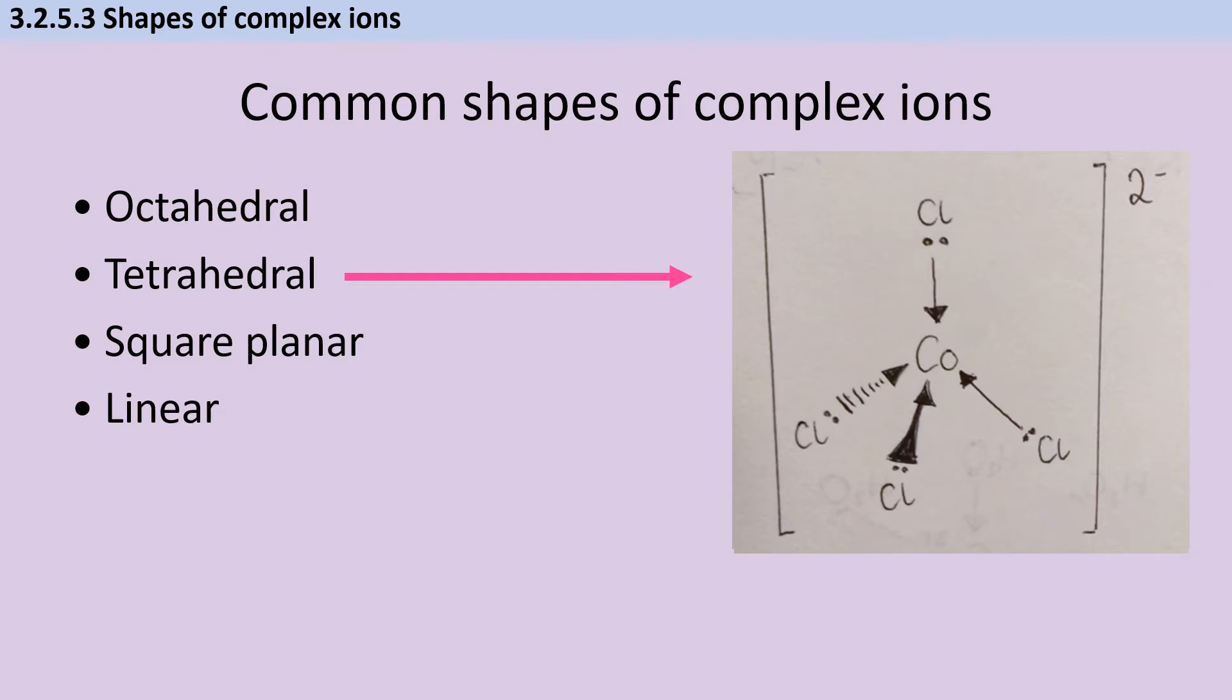When chloride ions replace water molecules in a hexa aqua ion with copper 2+, cobalt 2+, or iron 2+ at the center, or when they replace ammonia molecules or hydroxide ions, their larger size means only four ligands can surround the central metal ion. This leads to a tetrahedral complex.